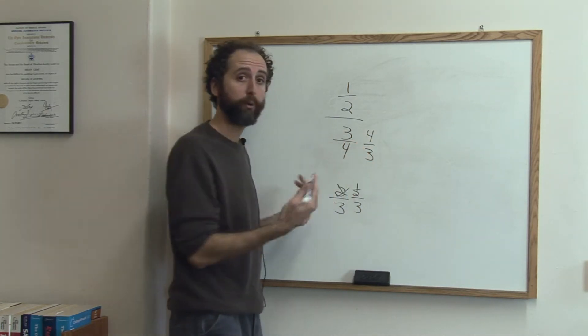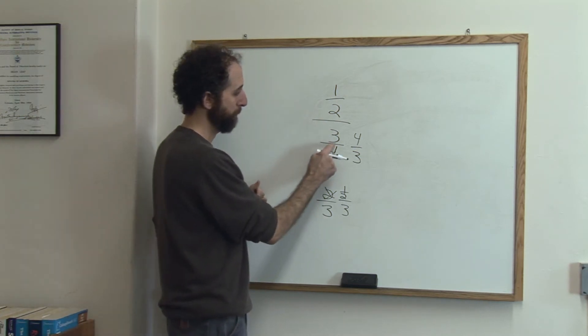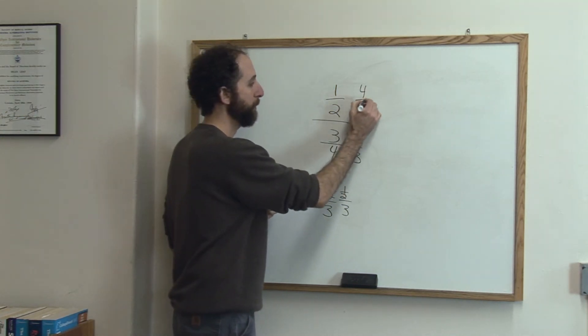So that would be 4 thirds. Reciprocal is the technical term, it means just flip it. You multiply by the reciprocal of the bottom number, and you have to do it on the top as well.